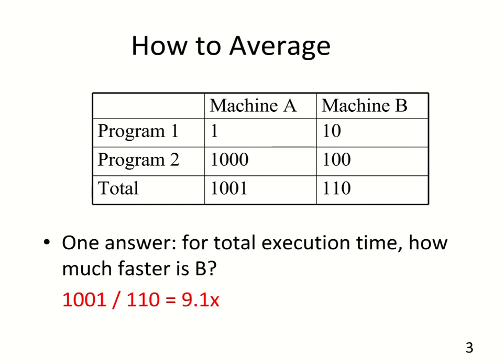If you have a set of benchmarks or programs running on multiple machines to compare performance, how do we average the performance of these machines? One way is illustrated here: we can simply add up the total execution time for machine A, which adds up to 1001 seconds, and for machine B, which adds up to 110 seconds, then take the ratio to determine which machine is faster — giving us a 9.1x speedup of machine B over machine A.